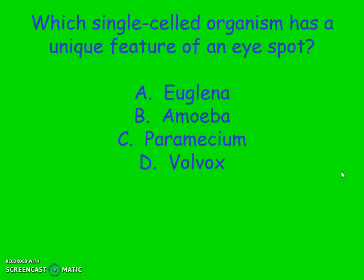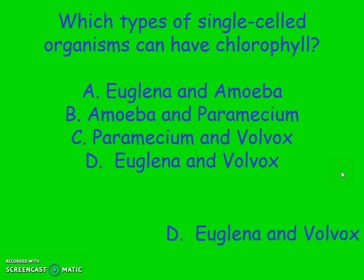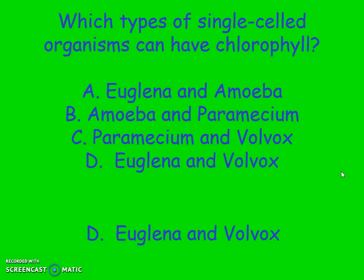Which single-celled organism has a unique feature of an eye spot? The eye spot starts with E — if you said euglena, you are correct. Which single-celled organism moves by cytoplasmic streaming? The blob itself — the amoeba. Last question: which type of single-celled organisms have chlorophyll? The answer is euglena and volvox — the green ones.